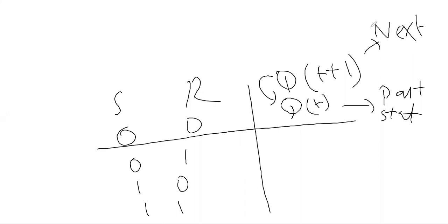If you give 0 and 1, that means reset. The next state Q of t plus 1 will be 1, meaning memory will be stored. And 1 and 0 means set, so 0 will be stored. Whenever S is equal to R equal to 1, this is unpredictable and not allowed.